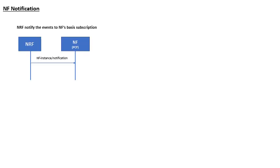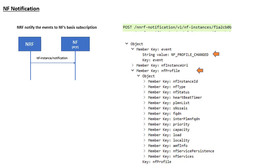Let's understand NRF notification. As soon as a subscribed event occurs — whatever has been subscribed by the network function — the NRF sends a notification: an NF instance notification. If a profile change is detected, the NRF will send the notification to the subscribed NF — in our case the PCF — along with the updated profile of the CHF. The PCF responds back, because the event that occurred is an NF profile change, which was subscribed by the PCF. So as soon as the NRF detects a profile change, it sends the updated profile to the PCF via an NRF notification.